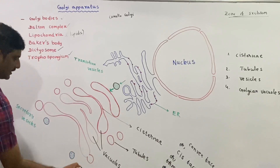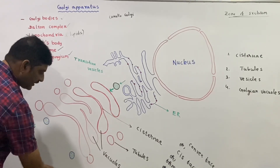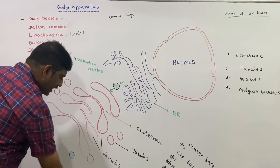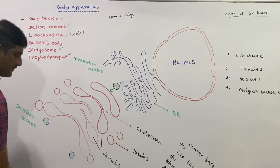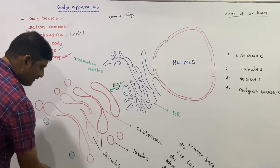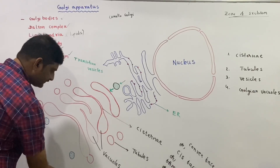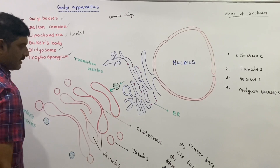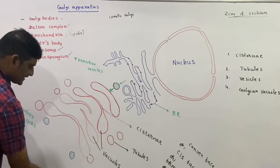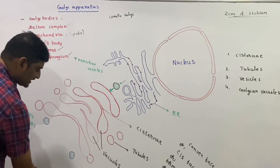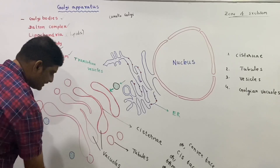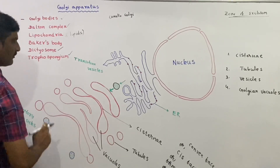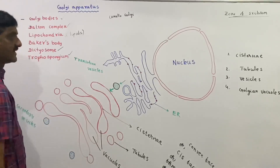The trans face is the concave face, also called the maturing face or distal face. So the Golgi apparatus has two faces: the cis face which is convex, and the trans face which is concave.